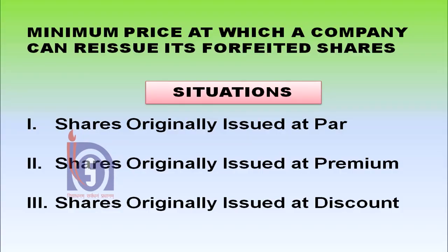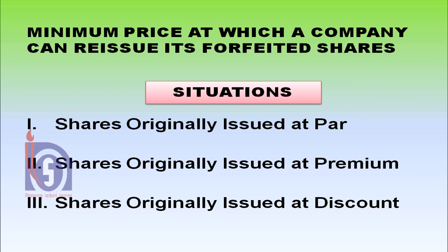Now what should be the minimum price at which a company can reissue its forfeited shares? There can be four different situations when the shares are again reissued: shares originally issued at par, shares originally issued at premium, and shares originally issued at discount. Let us discuss and understand each of these situations individually.